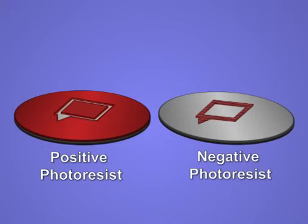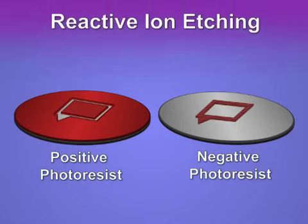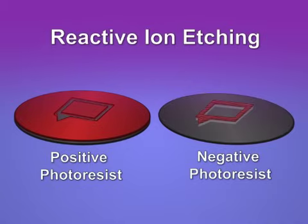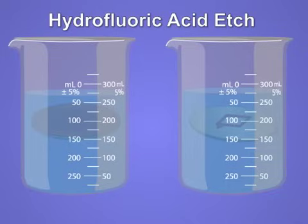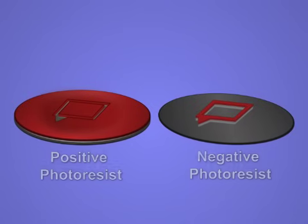The pattern is then etched into the exposed silicon dioxide layer. A dry etching technique called reactive ion etching uses chemically reactive plasma to remove material deposited on the wafer. Alternatively, a wet etch, such as hydrofluoric acid, can be used to etch silicon dioxide. The etching technique will vary depending on the material being processed.